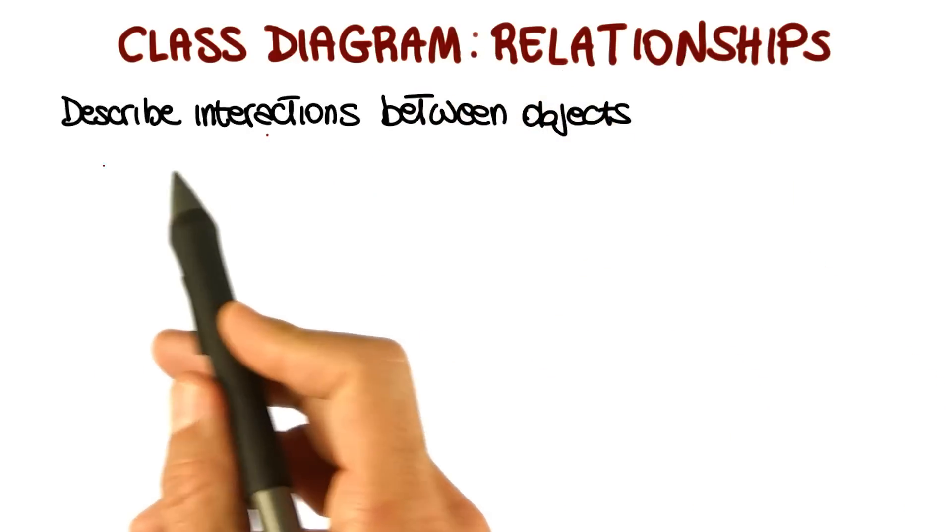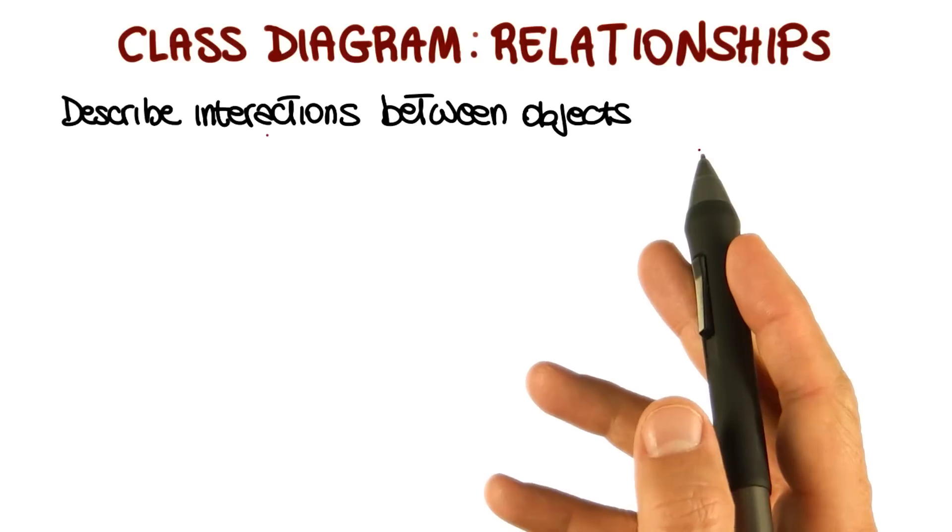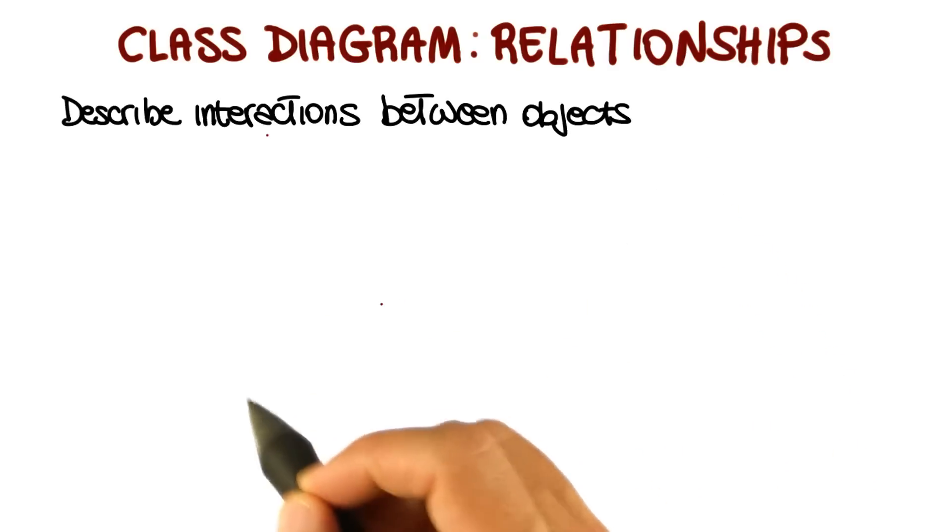First of all, relationships, as the name says, describe interactions between classes or between objects in my system. And we will describe three main types of relationships.